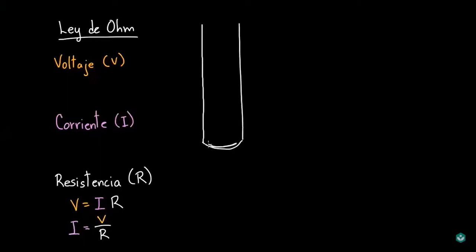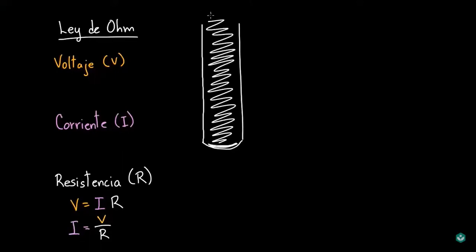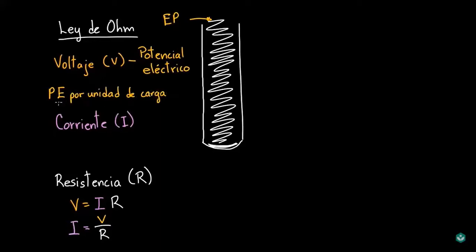Imaginemos una tubería llena de agua cerrada en el fondo. El agua tiene cierta energía potencial, análoga al voltaje — es potencial eléctrico por unidad de carga, es decir, joules por coulomb, aunque las unidades del voltaje son volts. Si destapamos la tubería, el agua cae inmediatamente: la energía potencial se convierte en energía cinética. Si nos fijamos en una parte particular de la tubería y preguntamos cuánta agua pasa por aquí por unidad de tiempo, esa cantidad es análoga a la corriente eléctrica.